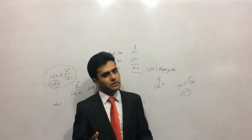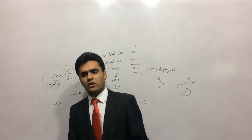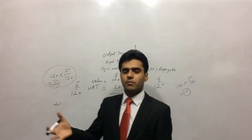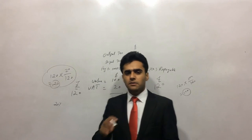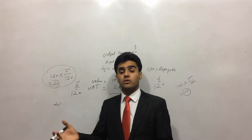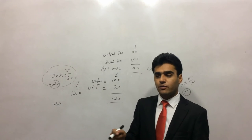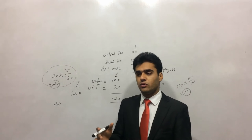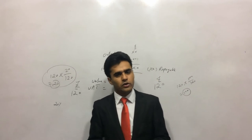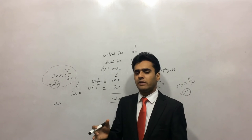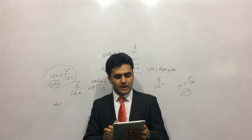For VAT purposes, there are three types of supplies. One is standard rated supply, another is zero rated supply, and the third is exempt supplies. Exempt supplies are those on which you do not have to pay or charge any tax. Zero rated supplies are those on which you charge tax at zero percent. Students often confuse exempt and zero rated — they are not the same thing.